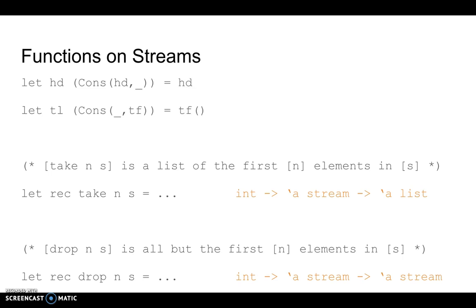Now let's try writing take and drop. Take is a list of the first n elements in the stream s, whereas drop is all but the first n elements in s. Notice the types of these functions. We're both taking an int and a stream. Take is going to return a finite list, whereas drop is going to return another infinite stream.